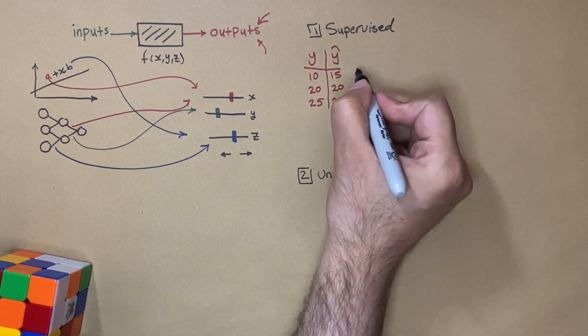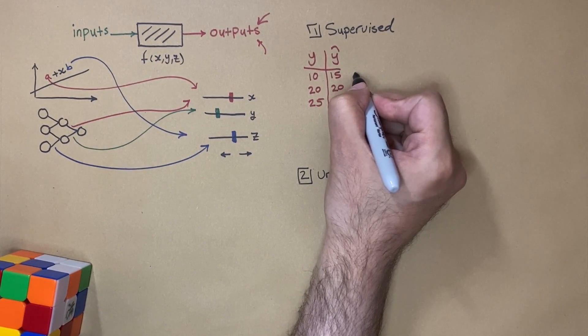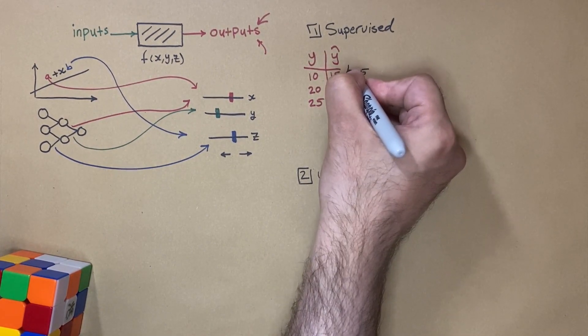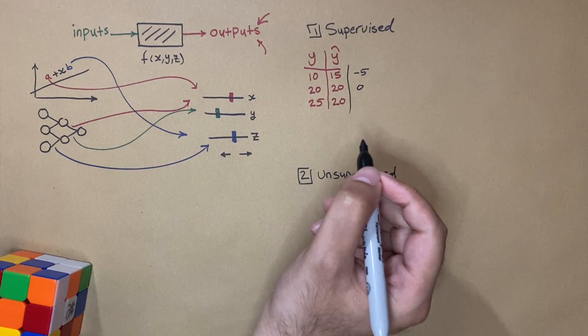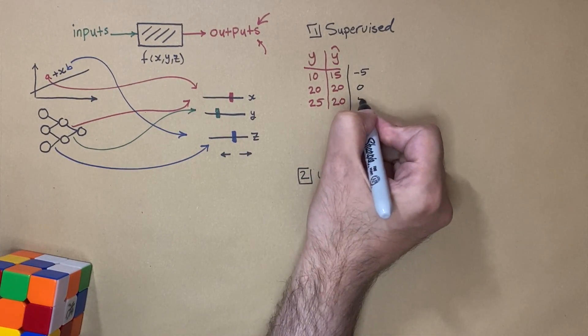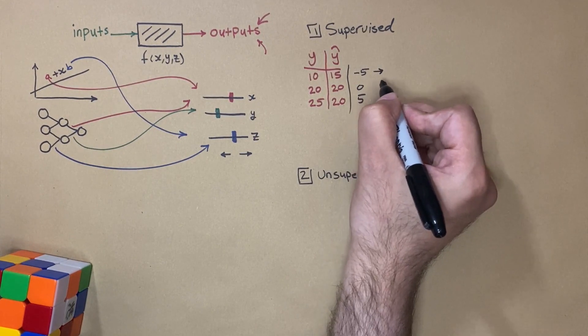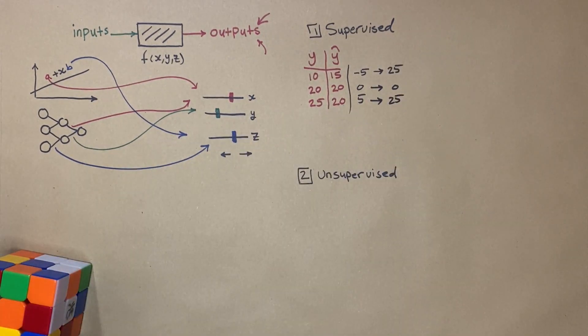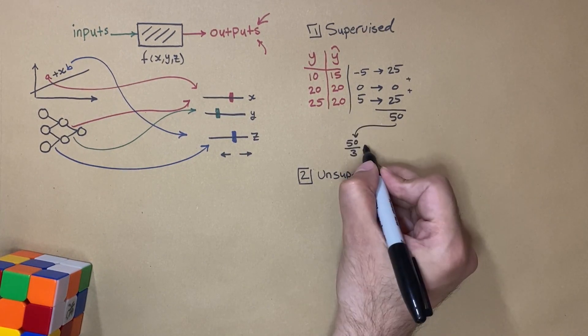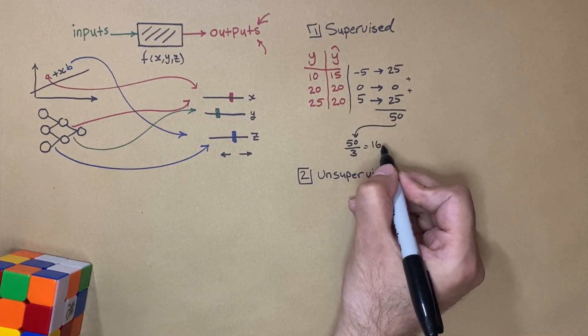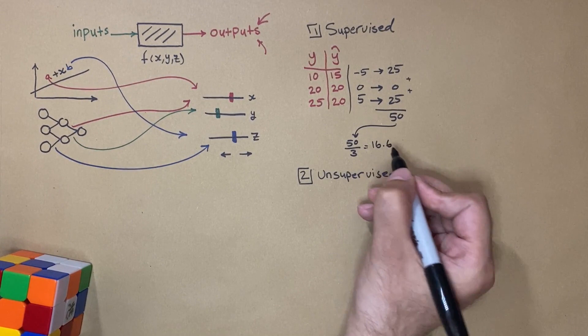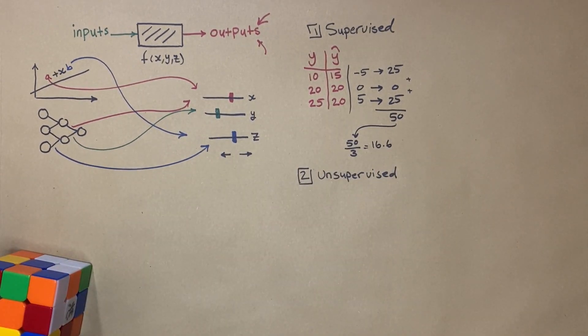Now we need to measure how good our model is. One way to do that is by defining the differences between the predicted and ground truth, 5, 0, 5, squaring them to remove the minus effect, and then finding the average. So we need to add them up and divide them by 3. And we get the result. This number reflects how good our model is. It's a relative number, so the 16.6 doesn't mean anything now. But we will use it to compare it with other models.